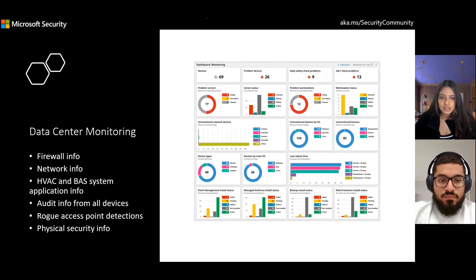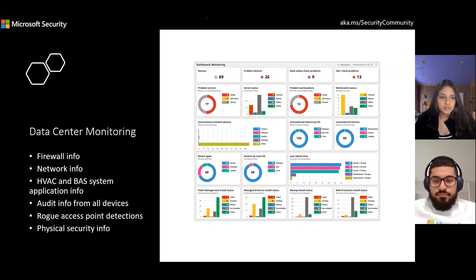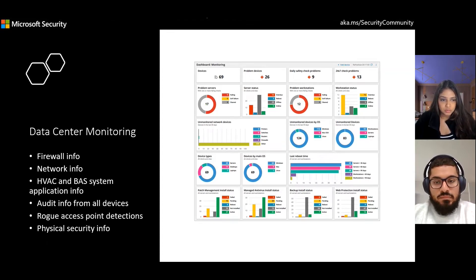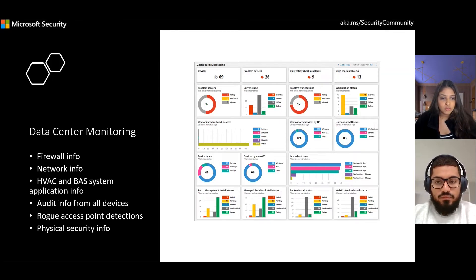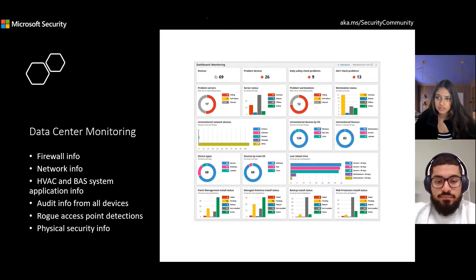One of the first steps in protecting a data center is to monitor data sources within it. Examples of data sources that can be monitored include firewall information, network information such as data packets flowing between devices, HVAC and BAS systems which control temperature and pressure, audit log information for devices covering login and logout activity, rogue access point detections which detect devices that should not be within a data center, and physical security information — such as who is entering and exiting your data center.